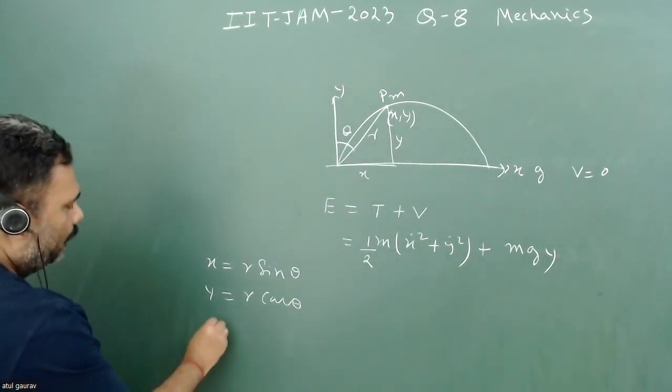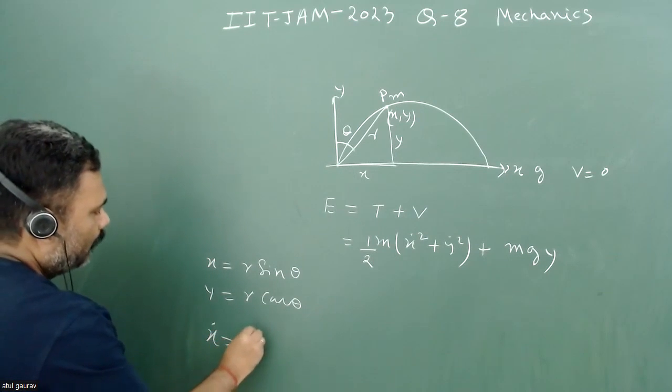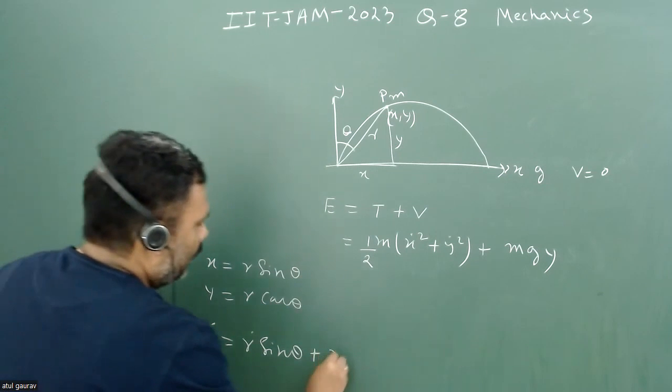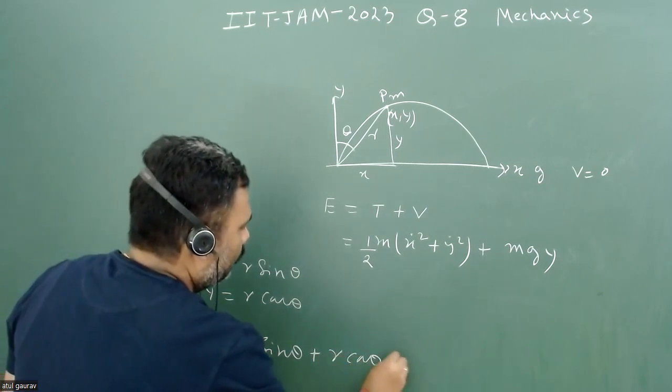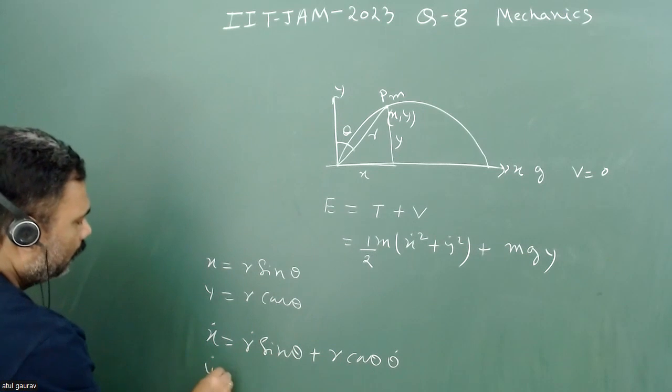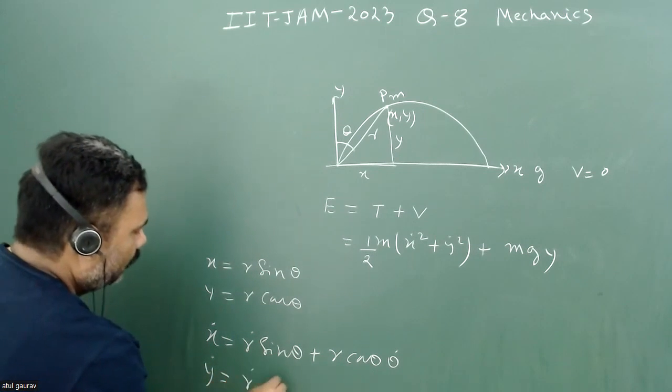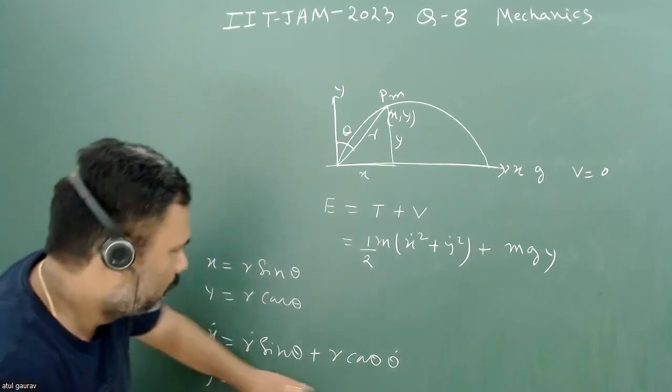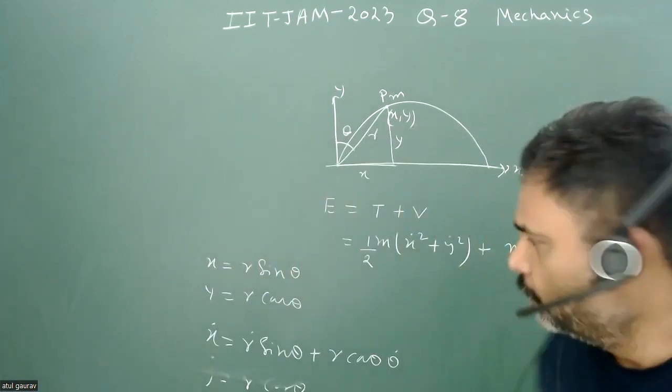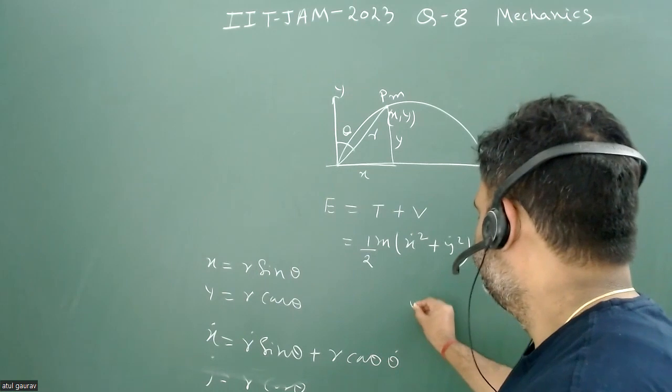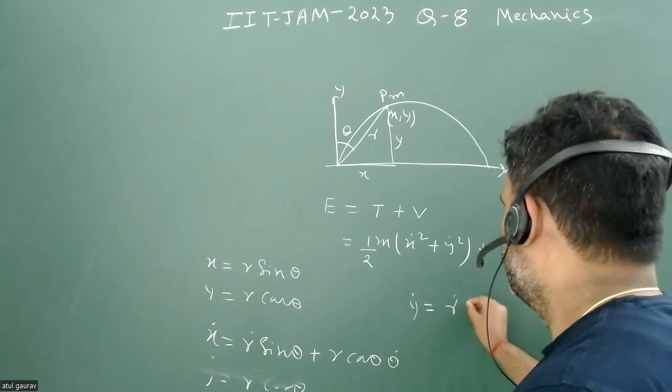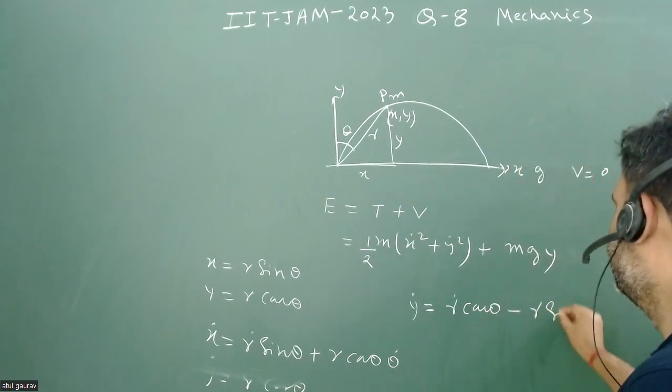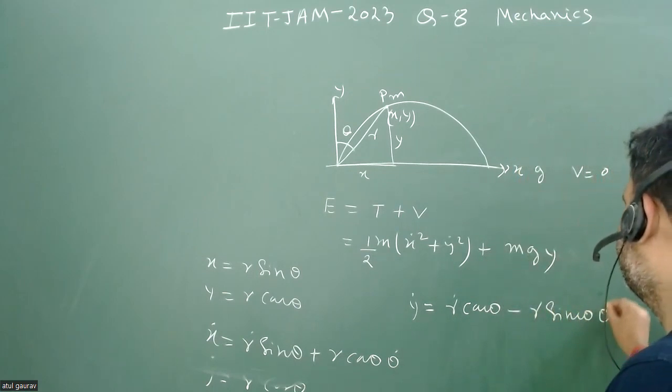And from here, we can find X dot is equal to R dot sine theta plus R cos theta theta dot. And Y dot is equal to R dot cos theta minus R sine theta theta dot.